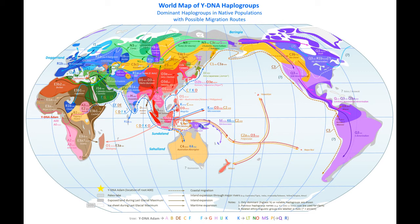There's the SMNO branch in the east. You have IJ, which formed in the Levant and then split up with J staying south and I going north. You have the northern branch of P, which left the area around the Indian subcontinent, went north, and there became R2 — which then conquered India — R1A, which conquered Europe and then conquered India again, and Q, which conquered the Amerindians.